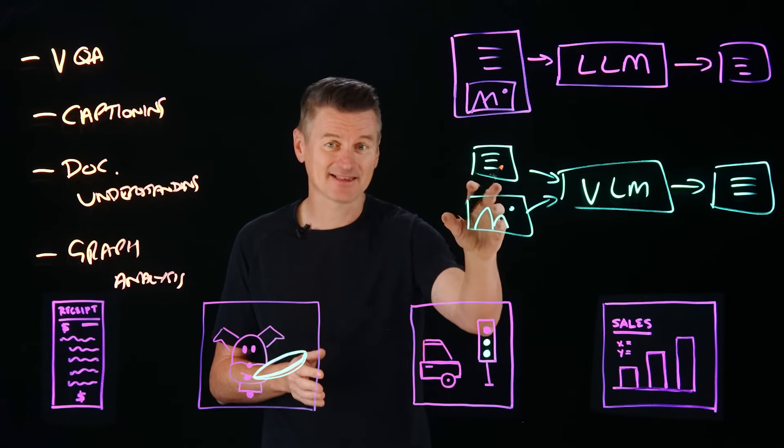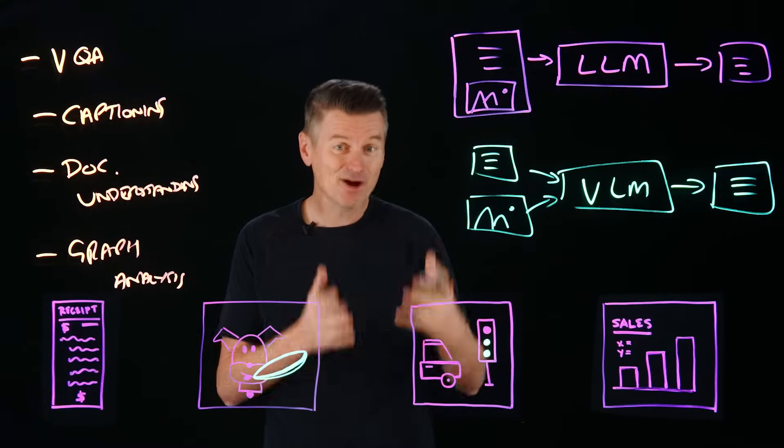And the model can extract the data in the graphs and interpret them. So visual language models don't just process images and text separately. They merge them. But how do they actually do that? Well, let's break it down.